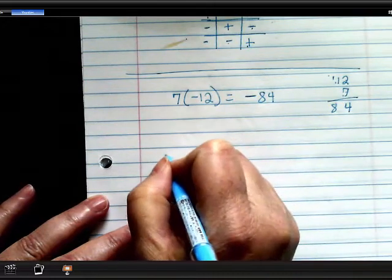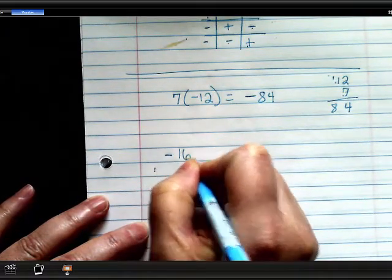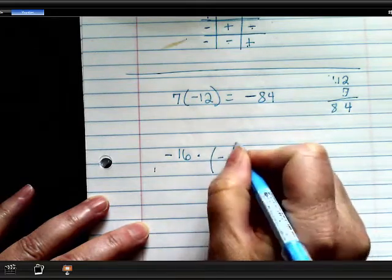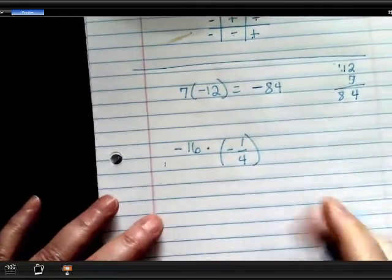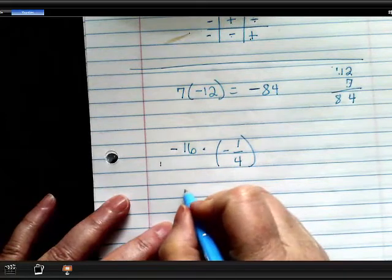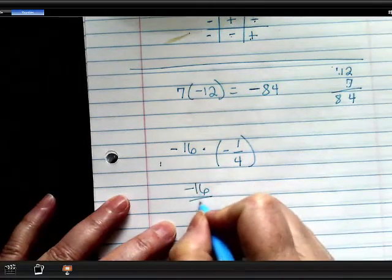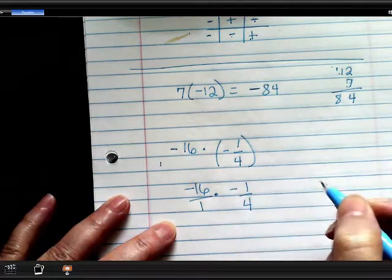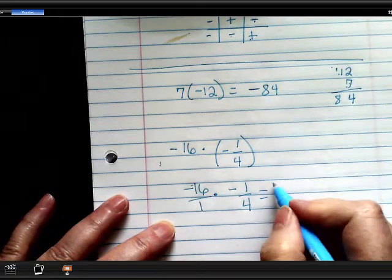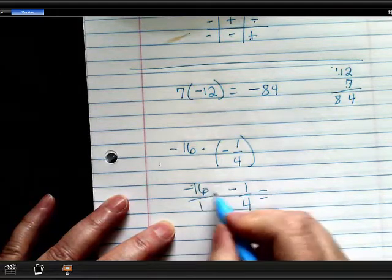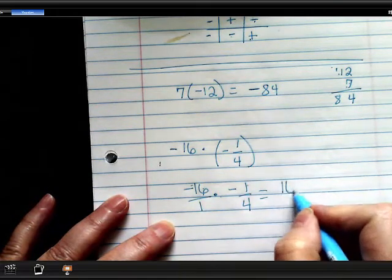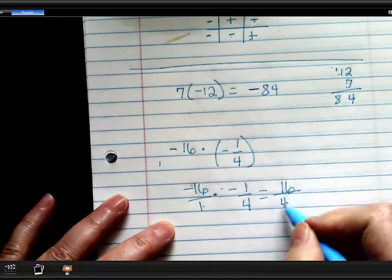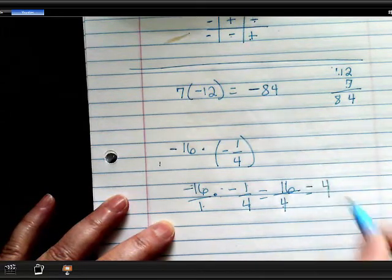What about negative 16 times negative 1/4? Okay, so you need to change this to a fraction. Negative 16 over 1 times negative 1 over 4. Now remember, a negative times a negative is a positive. What's 16 times 1? What's 1 times 4? And now what's 16 divided by 4? 4.